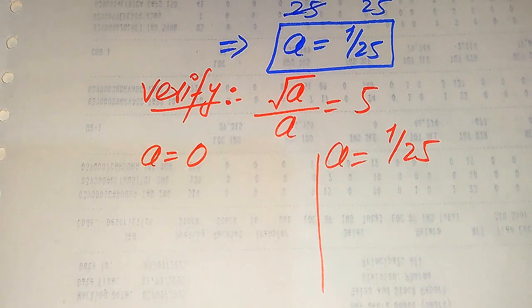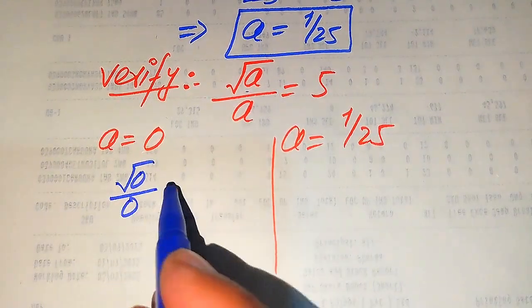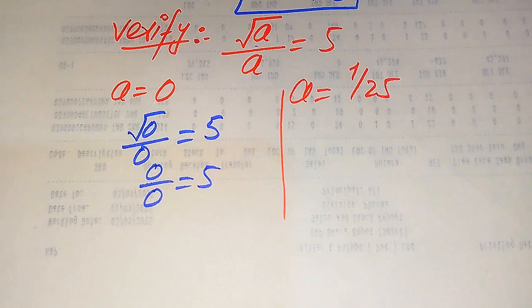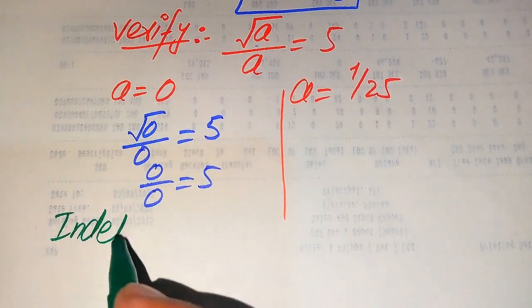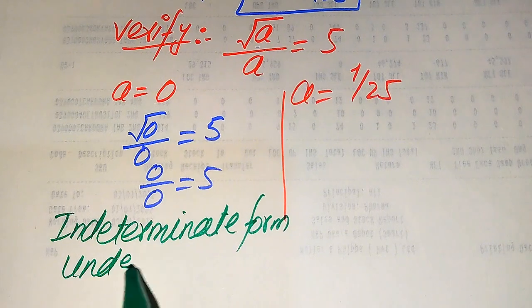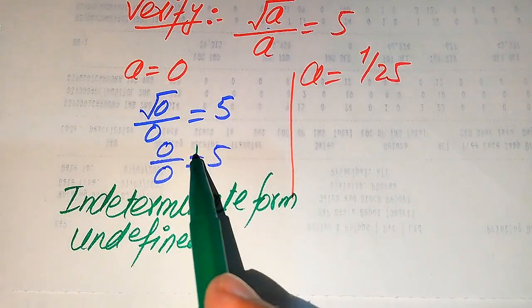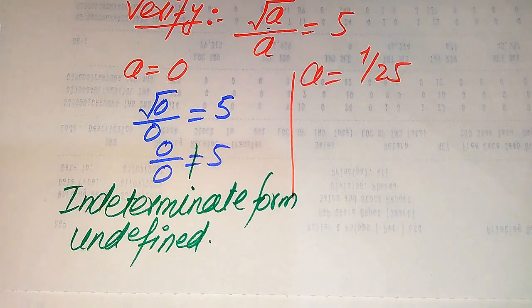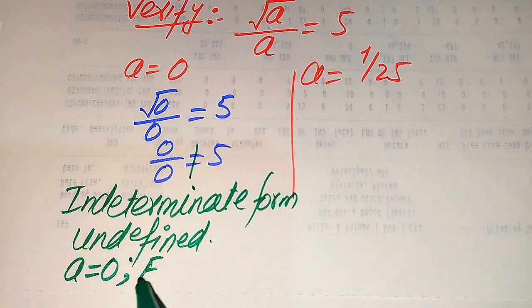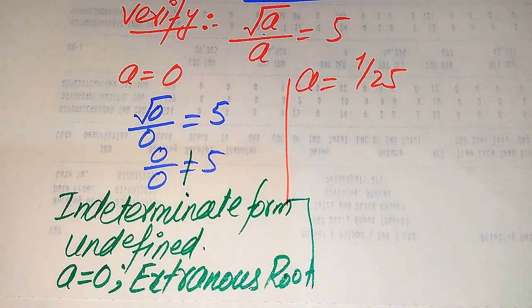When we substitute a equals 0 into the left-hand side, it becomes square root of 0 divided by 0, which gives 0 over 0 equals 5. The form 0 over 0 is called the indeterminate form — in other words it is undefined. Since this side is undefined, the value a equals 0 does not satisfy the given equation, and both sides are not equal. Therefore we conclude that a equals 0 is an extraneous root of the given equation.